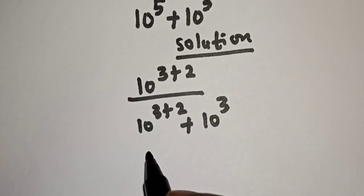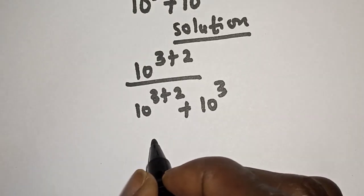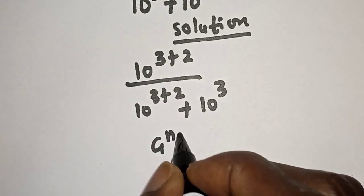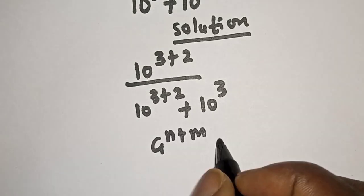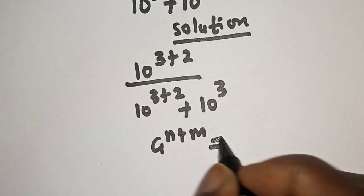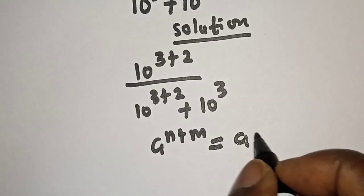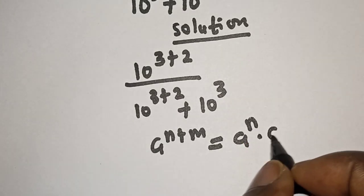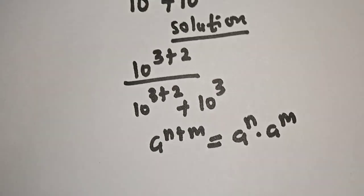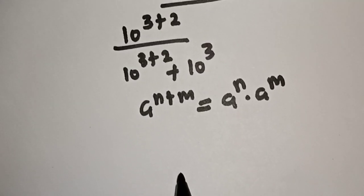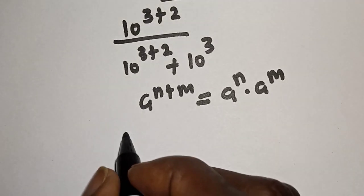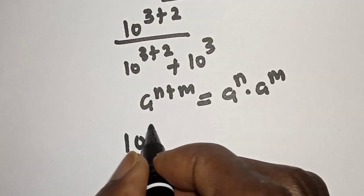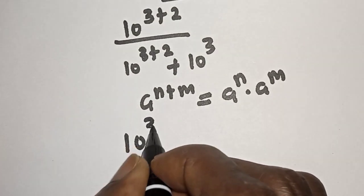Take note of this rule: if you have a raised to power n plus m, this is equal to a raised to power n multiplied by a raised to power m. Then we have 10 raised to power 3 multiplied by 10 raised to power 2.